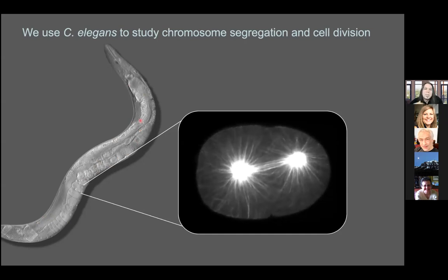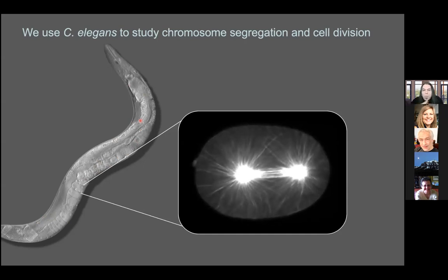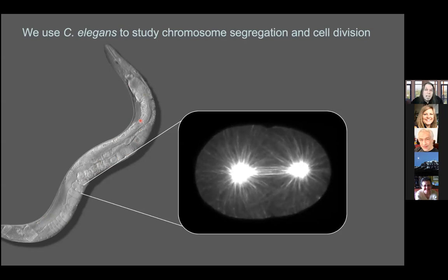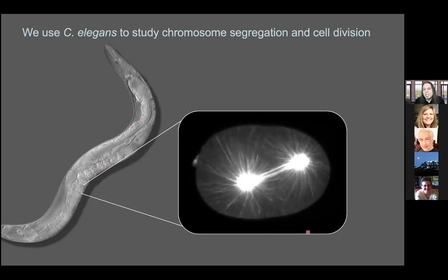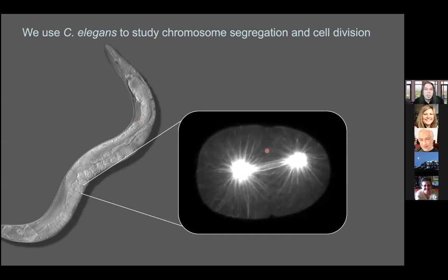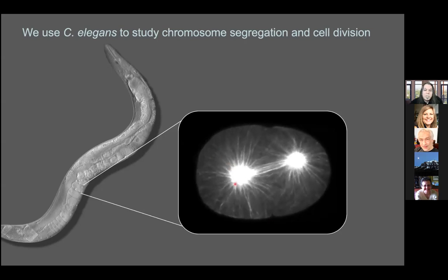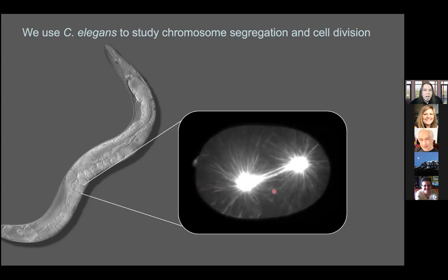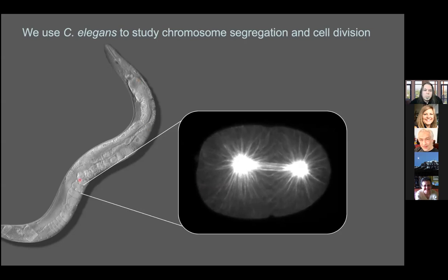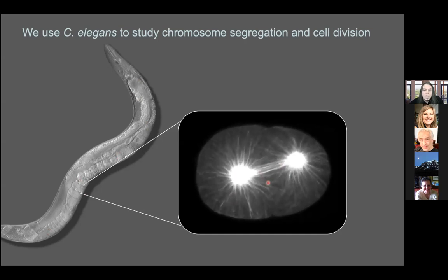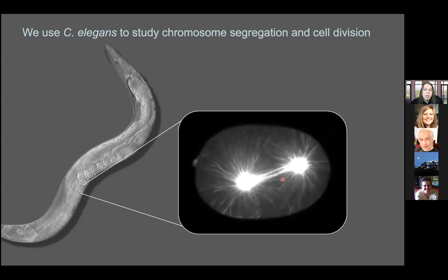C. elegans develops in a very stereotypical way — basically every worm develops the same way. If you use genetics to identify a gene required for a process, you can detect even subtle changes in the normal developmental program. We use those advantages to understand how chromosomes segregate, how spindles are formed, and how they function. This is the single-celled embryo from C. elegans, showing fluorescent tubulin so you can appreciate the dynamics of those microtubules as this cell is trying to separate its chromosomes in the very first cell division. You can see the bright spots where centrosomes are nucleating microtubules.